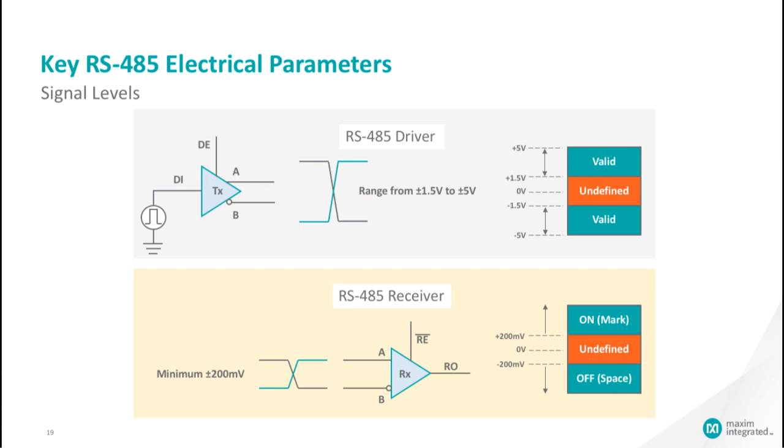Graphically, the top diagram shows the minimum and maximum voltage range for the RS-485's driver. If the driver's voltage is less than ±1.5 volts, there is no guarantee the receiver can detect the incoming data. The bottom diagram shows the working range of the RS-485 receiver. Signals falling below ±200 millivolts will be interpreted as no incoming signal or data.